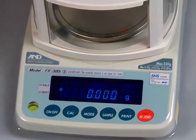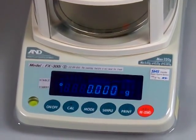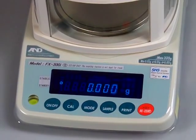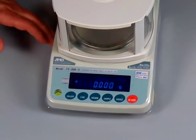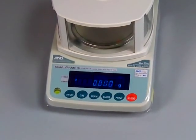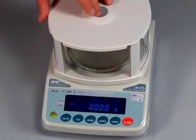On the milligram balances, A&D has three models. They have the FX-120, then they have the 200 and the 300. All the balances use the same housing. They all come with the draft shield. This is a plastic draft shield.